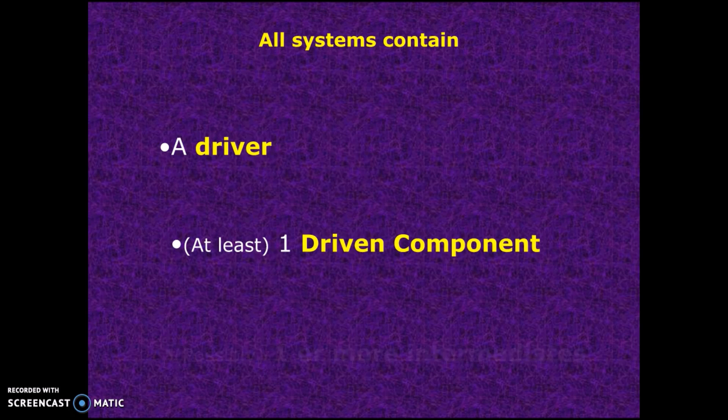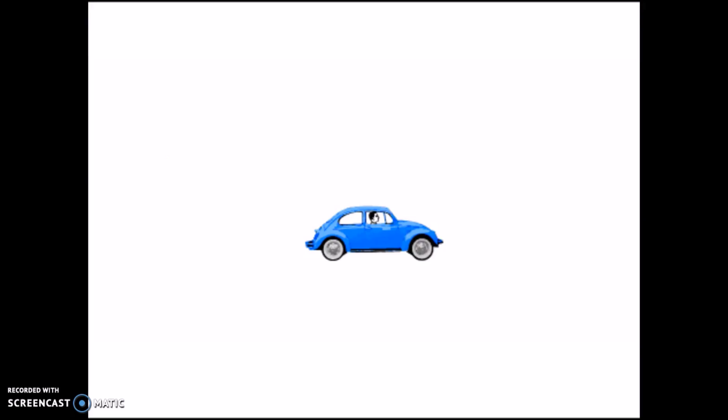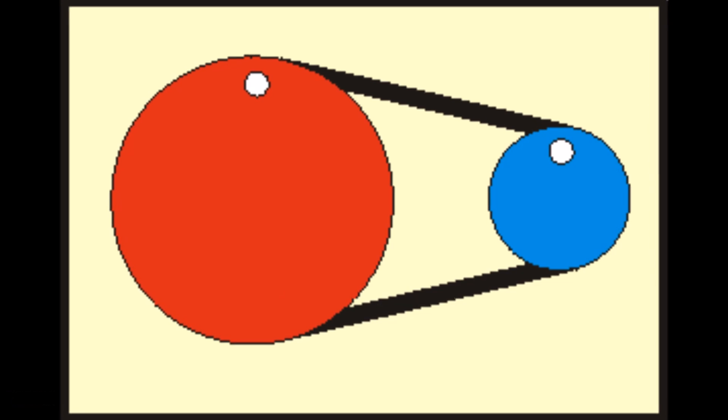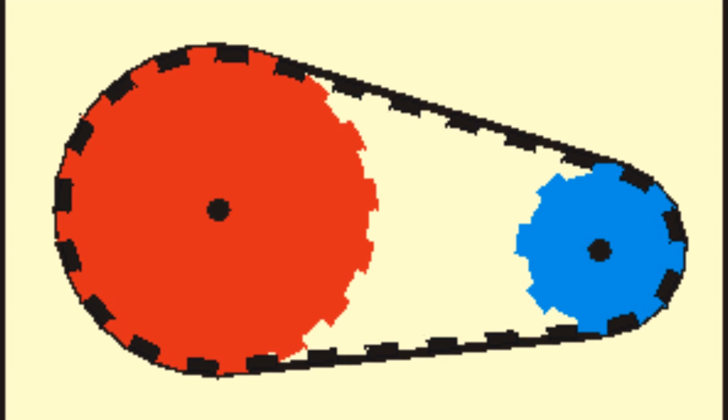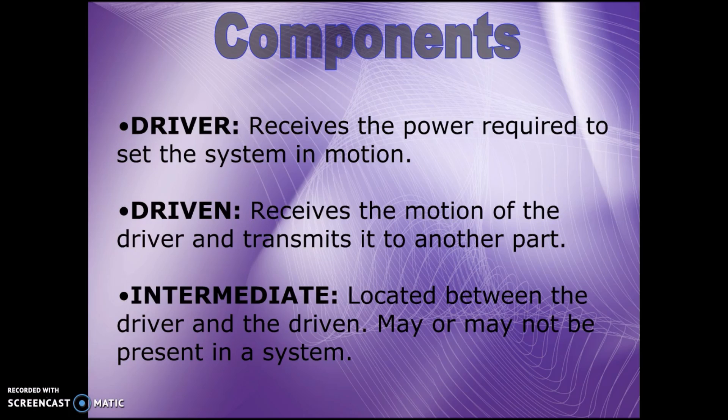And possibly one or more intermediates. Now a driver, as we know, is the thing in control. It's the part that is starting the motion. The driven component is often called a follower because it follows that motion. It is a part where the motion gets transmitted to. And an intermediate is a part that connects the driver or driven components.